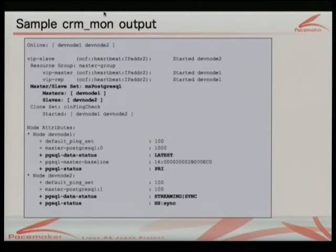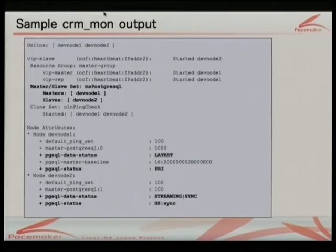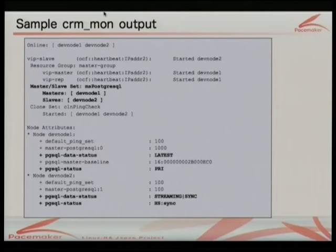Once you launch pacemaker, this is the actual running status as a replication cluster. Looking at the master-slave display, in this case master is running on node 1 and slave is running on node 2, with the virtual IPs assigned accordingly. You may also see some new attributes here. The pgsql-status attribute shows the current running status of the database, and pgsql-data-status shows the status of the data — whether the data is the latest or old.